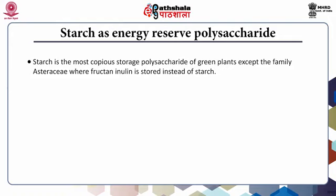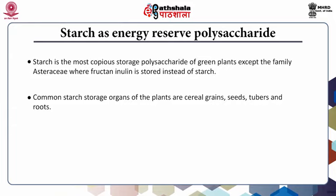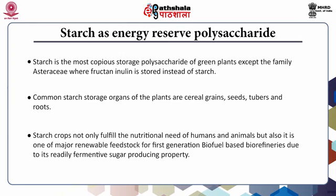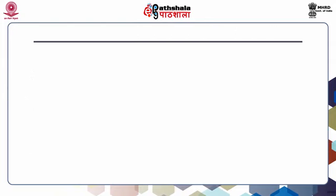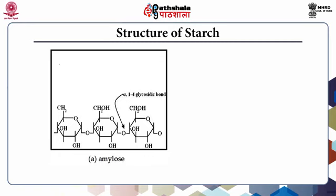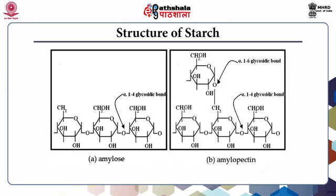Starch as energy reserve polysaccharides: starch is the most copious storage polysaccharide of green plants, except the family Asteraceae where fructan inulin is stored instead. Common starch storage organs of plants are cereal grains, seeds, tubers, and roots. Starch crops not only fulfill the nutritional needs of humans and animals but are also a major renewable feedstock for first-generation biofuel refineries due to their readily fermented sugar-producing property. Starch can be of two kinds: amylose (linear) and amylopectin (branched).